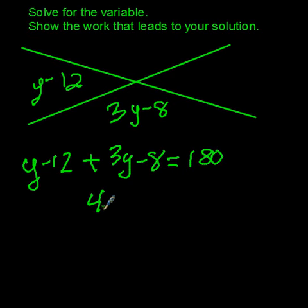Combine like terms, I get 4y minus 20 equals 180.